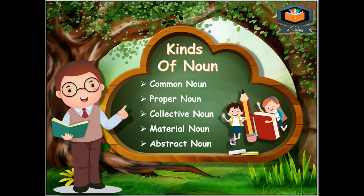Now let's move towards the kinds of noun. First is common noun, second is proper noun, third is collective noun, fourth is material noun, and fifth and last is abstract noun. So there are five kinds of nouns.